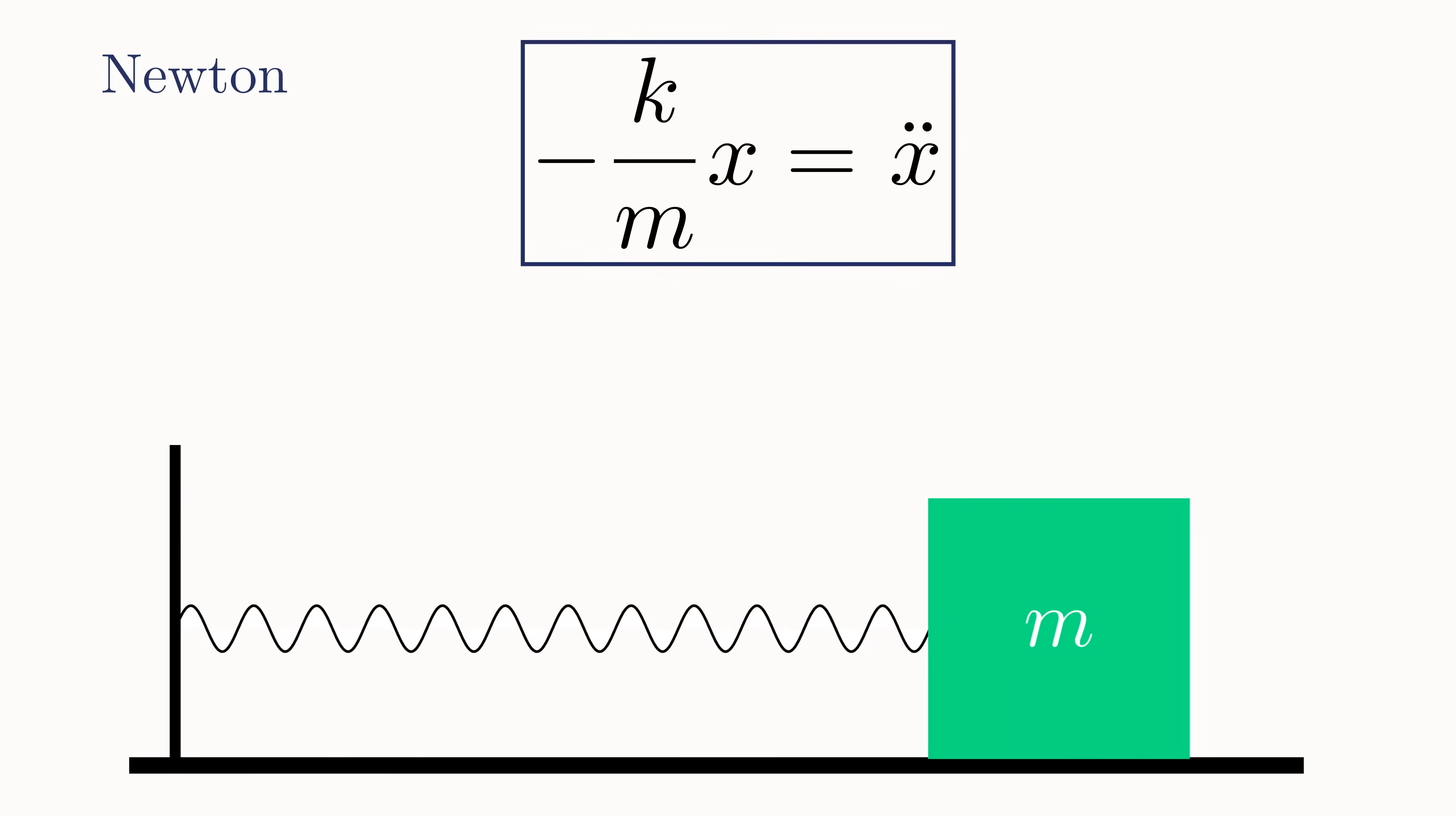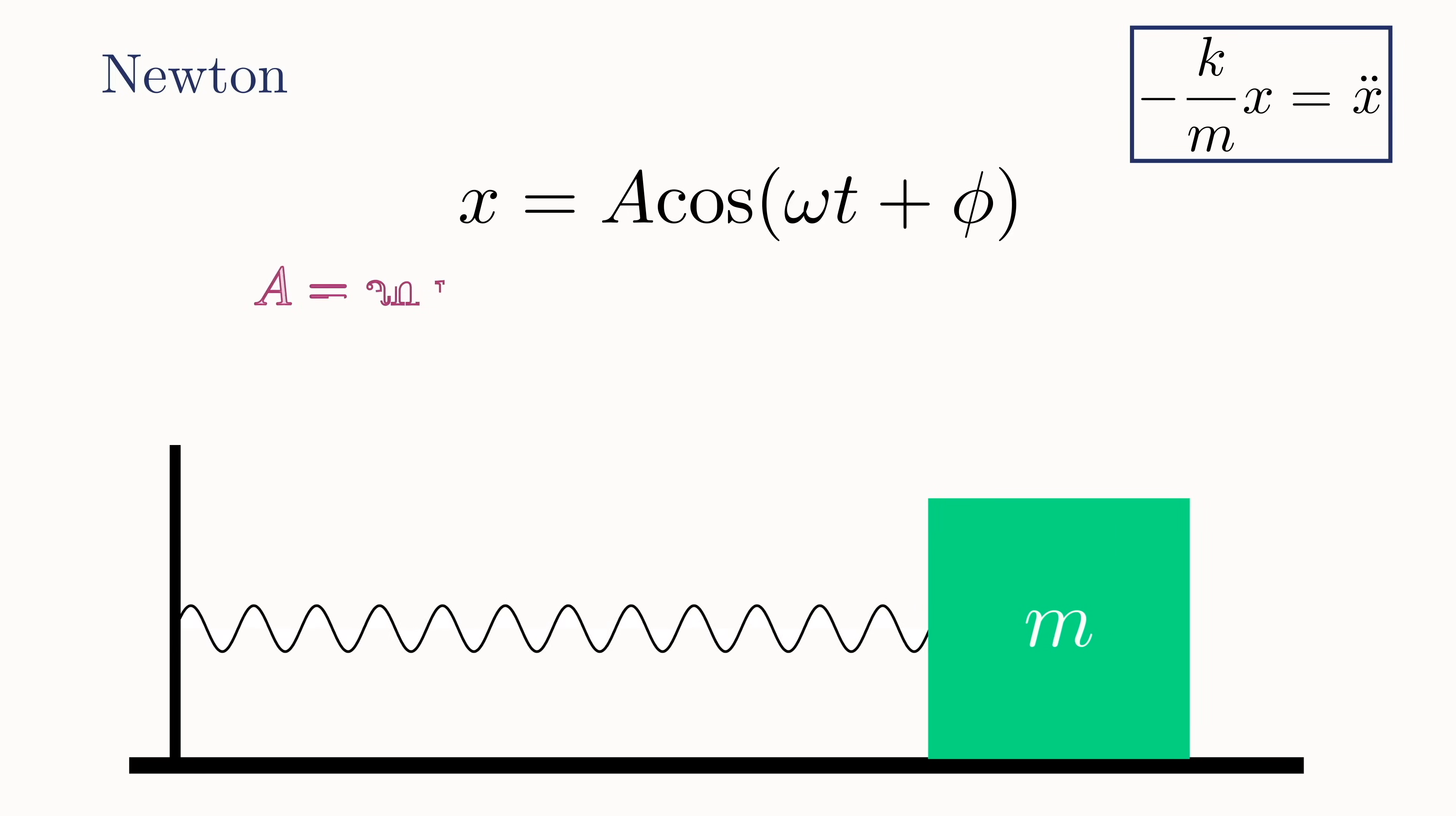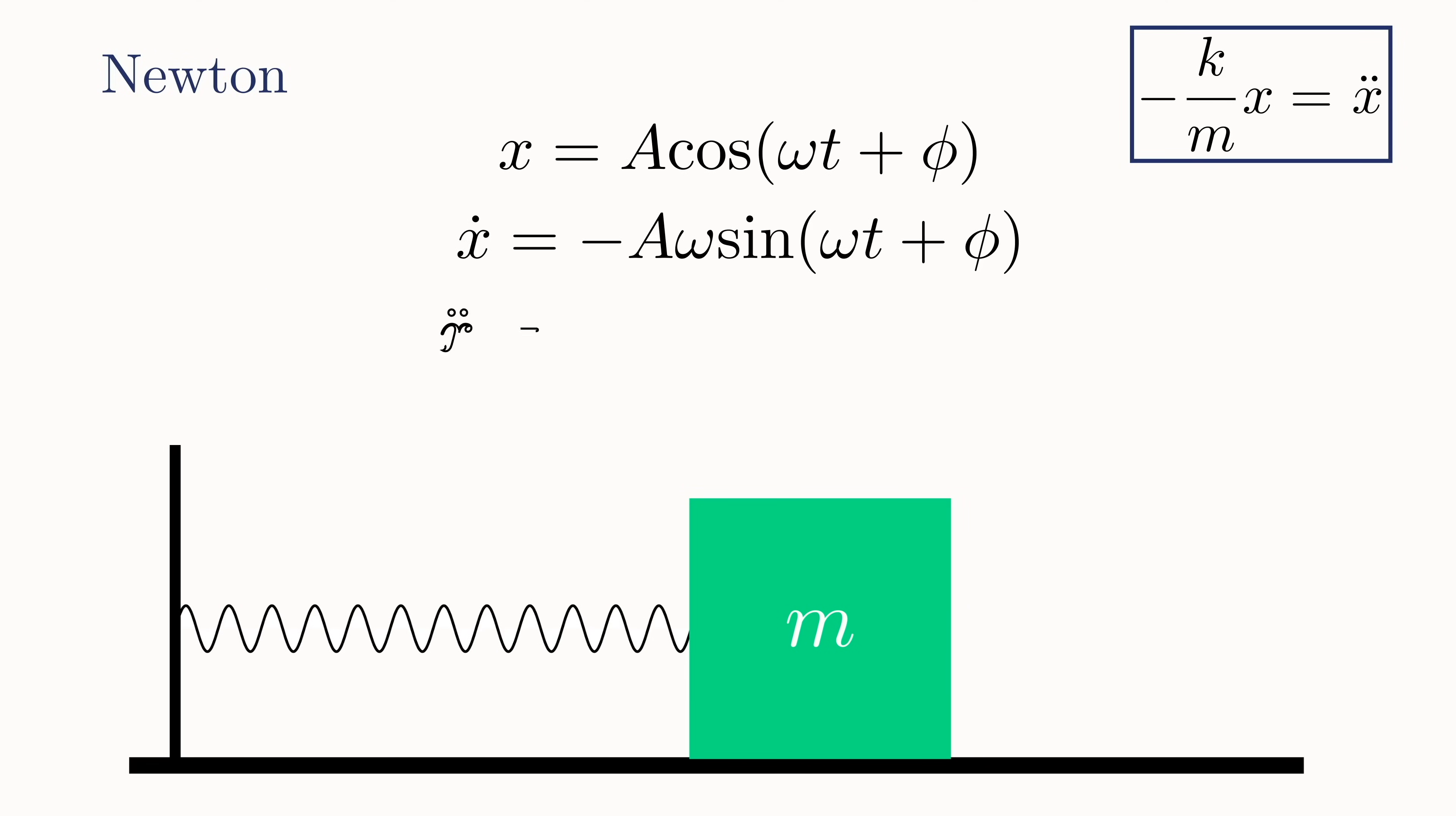Now the solution to this type of differential equation turns out to be an equation of the form x equals a cosine omega t plus phi, where omega is called the angular frequency, a is the amplitude, and phi is the phase. We can verify it works by taking the derivative and second derivative of x. Then we can plug these values into our equation of motion.